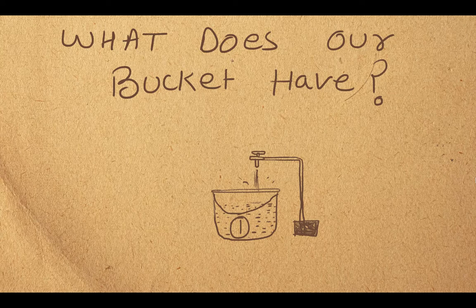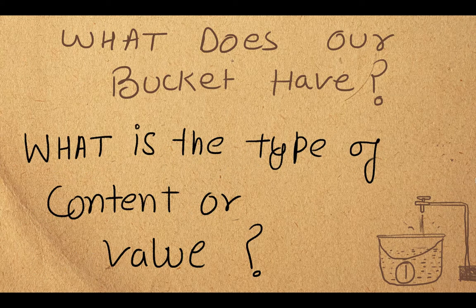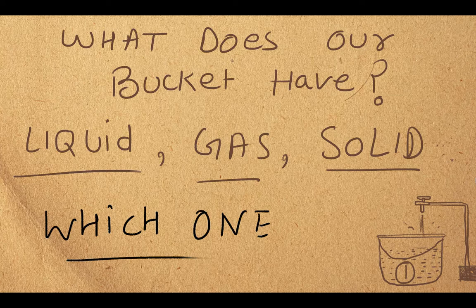Look at this scenario: we have a bucket, and there is water inside it. A name is given to it, and the content is in the form of liquid — not solid or gas. Now, if we had to store gas inside it we cannot do that in a bucket. We would need a bottle for that. That is why we need to know the type of the data.